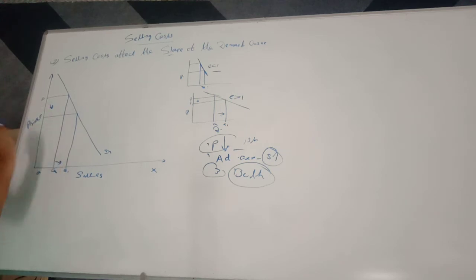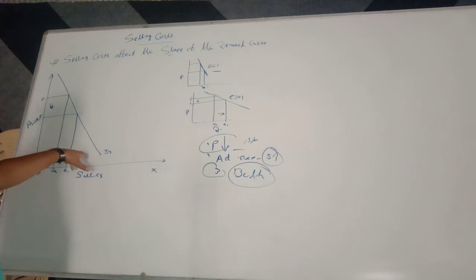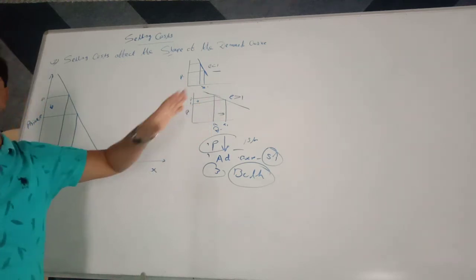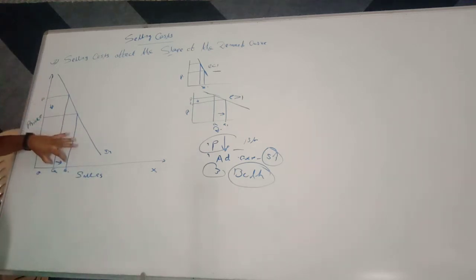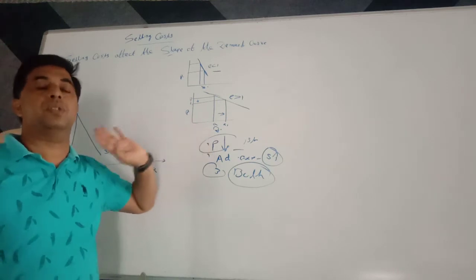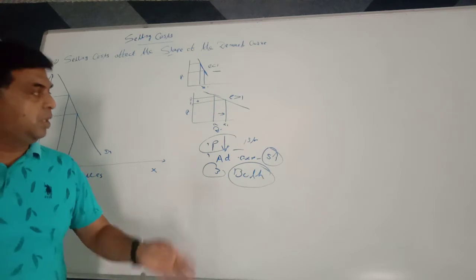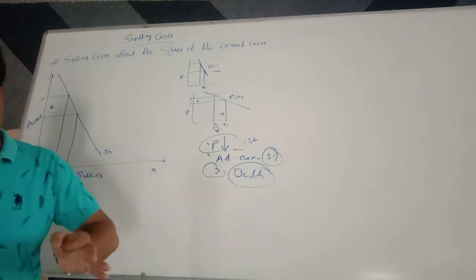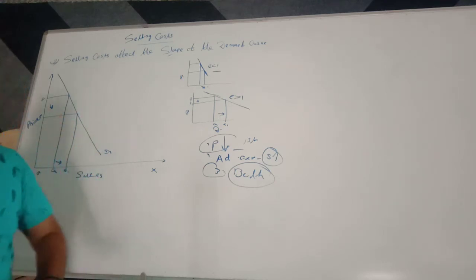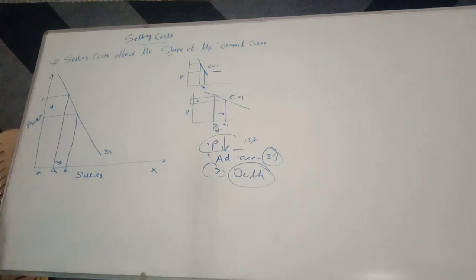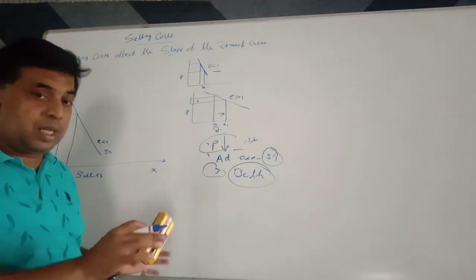You can observe from the diagram this is an example of relatively inelastic demand. The proportionate change in demand is less than the proportionate change in price. You have reduced the price but the increase in sales is not so large — because you have adopted only one alternative, reducing price. The elasticity is less than one: the percentage change in demand is less than the percentage change in price.